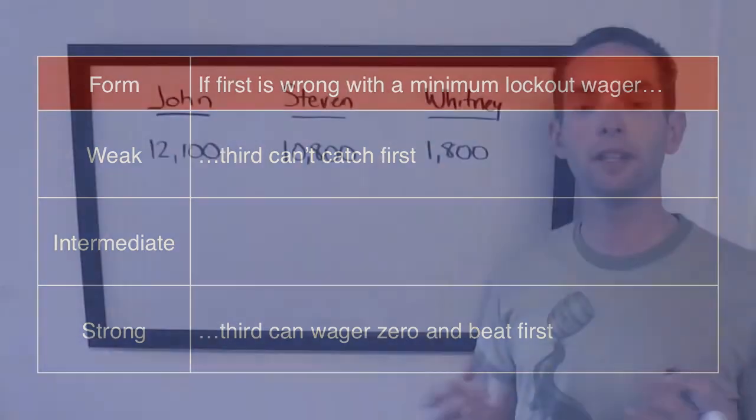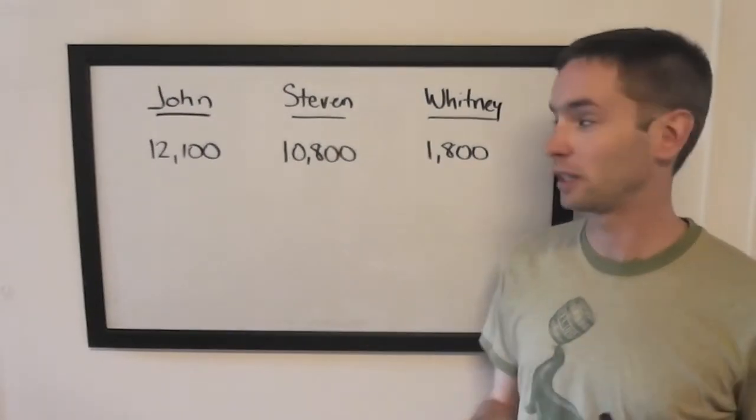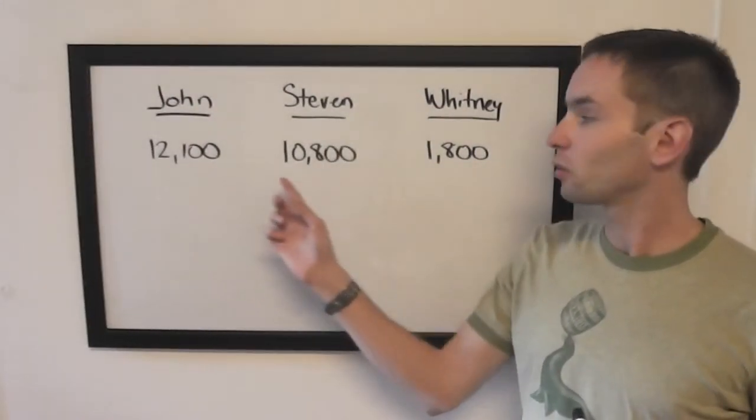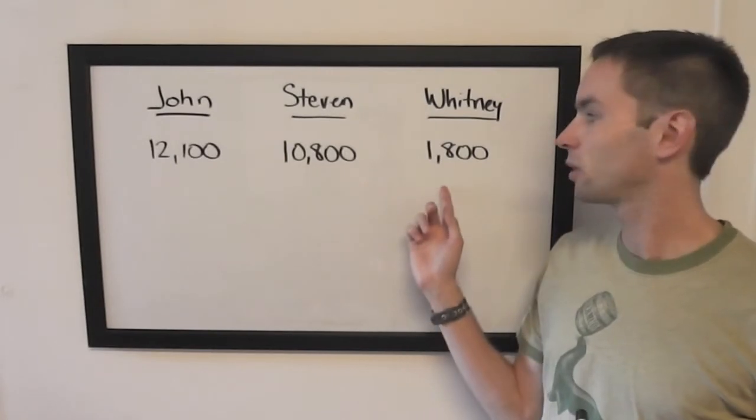Finally, there's the intermediate form, which, as you might guess, is between strong and weak. Here we have John with 12,100, Stephen with 10,800, and Whitney with 1,800.